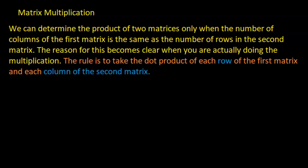Now we want to look at matrix multiplication — it's not as straightforward as addition or subtraction, but it's not that complicated either. We can determine the product of two matrices only when the number of columns of the first matrix is the same as the number of rows in the second matrix. Let me dissect that a little bit.